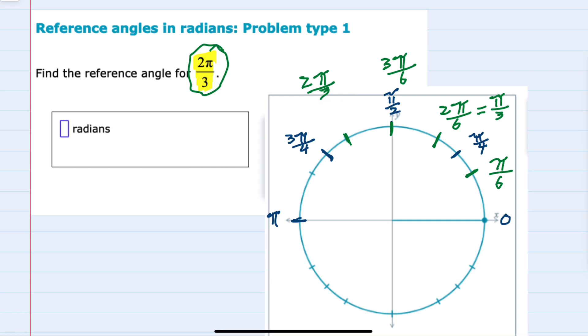This angle is 2π/3. However, we are asked for the reference angle for 2π/3, and reference angles are always measured against the nearest portion of the x-axis.